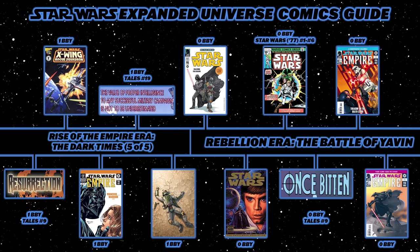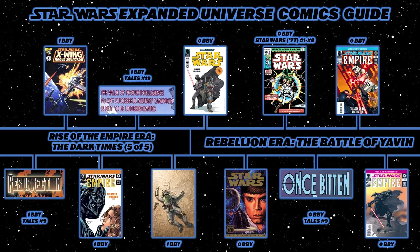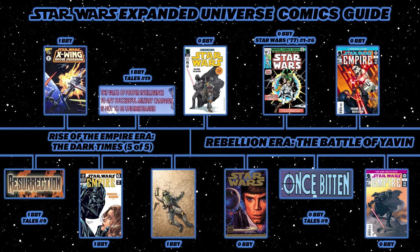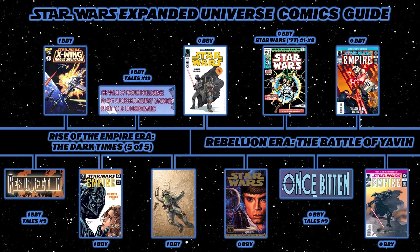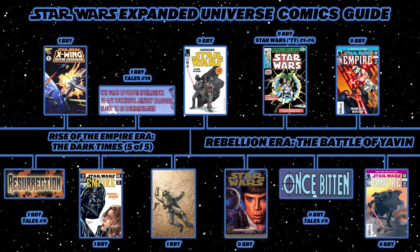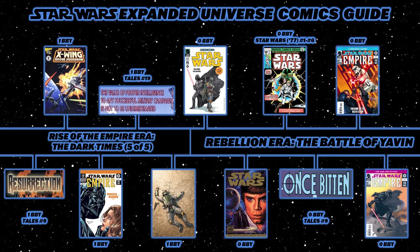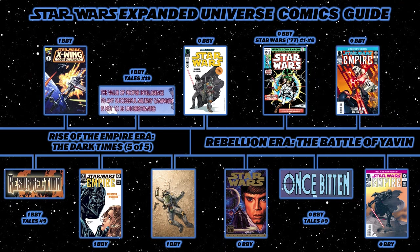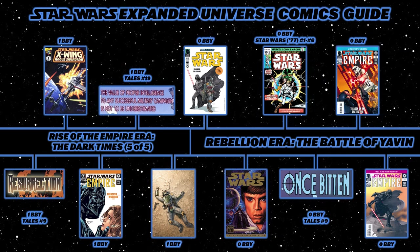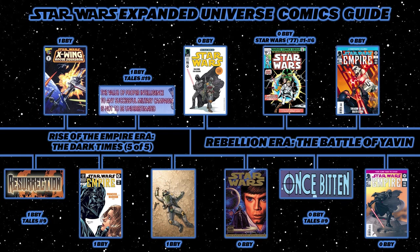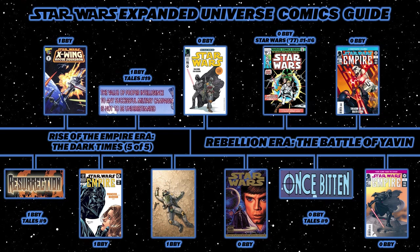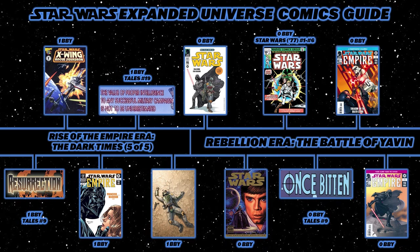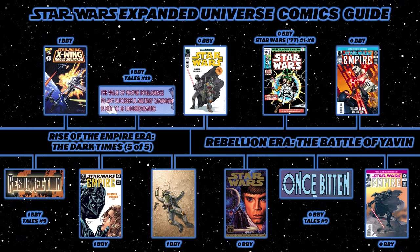We've finally reached A New Hope in the timeline. There are two ways to read it in comic form: the official way is A New Hope: The Special Edition, a four-issue miniseries adapting the special edition of Episode IV; or you can read the 1970s adaptation contained in the first six issues of the Marvel Star Wars 1977 series. After either adaptation, read Star Wars Tales number 12's Once Bitten.